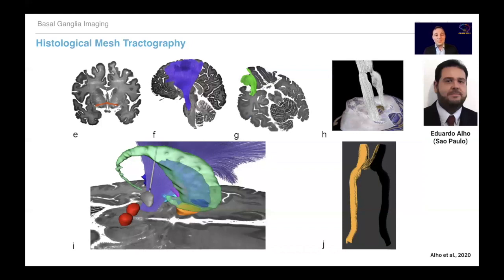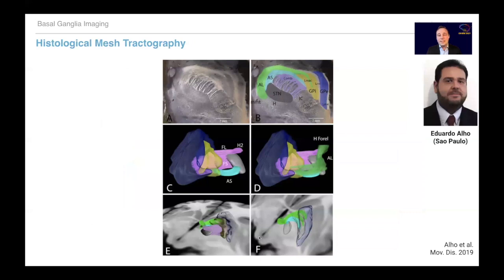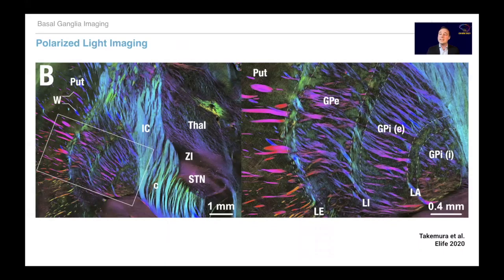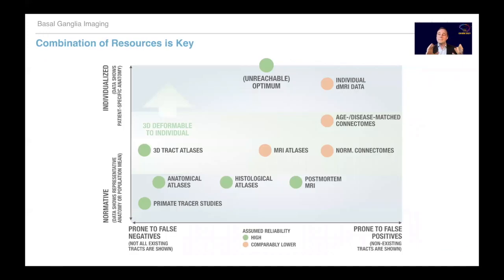Another option to define white matter tracts in the basal ganglia region is histological mesh tractography, also introduced by Eduardo Aglio, who used that method on histology to study very thin small bundles between the subthalamic nucleus and the pallidum. Of course we can also use diffusion MRI, being meticulous about it — as Eric Middlebrooks did to manually define and trace a priori known tracts, which is another openly available atlas within LeadDBS. We can also use techniques like polarized light imaging. In my view, the optimal solution is to integrate and combine in vivo data with atlas data using tools like WarpDrive to fuse them together.